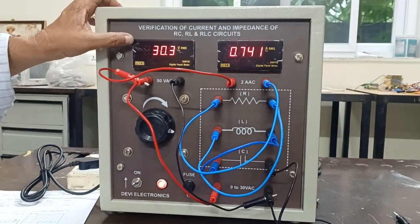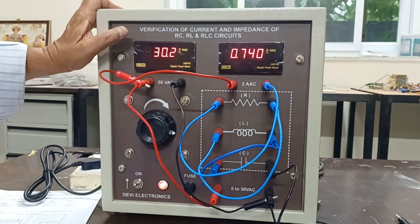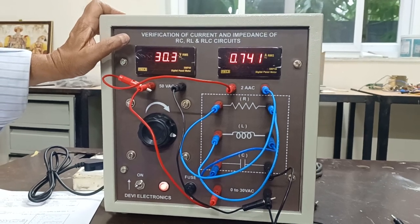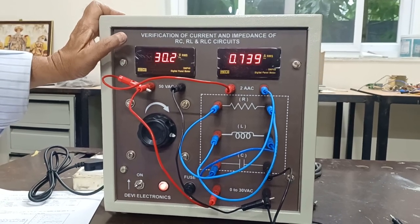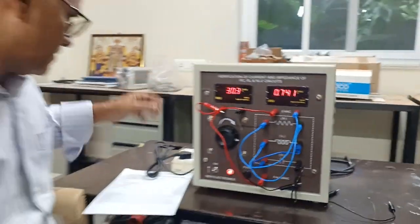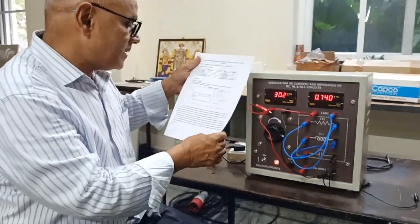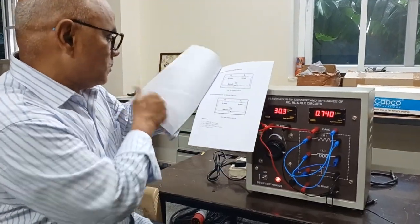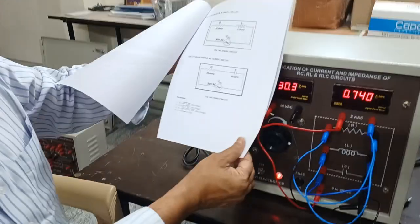So, at 30 volts, it is consuming 0.740 ampere. It is 740 milliampere. The calculations part and all will be given clearly indicated in our manual.